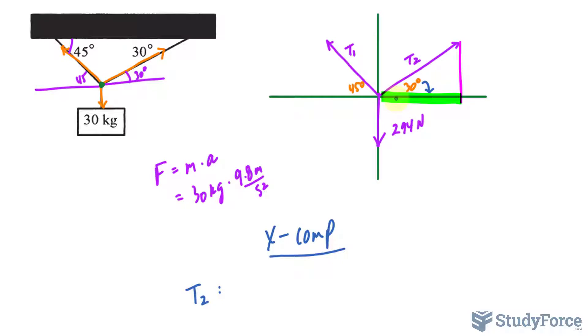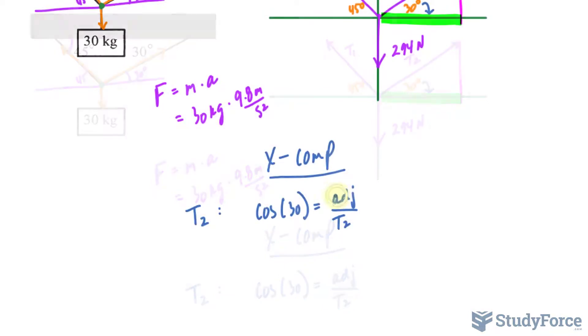Remember cosine is adjacent over hypotenuse. So I'll write down cosine at an angle of 30 is equal to the adjacent over the hypotenuse T2. Solving for adjacent, which is the x component, we get T2 times cosine 30, and that's equal to the x component for T2.